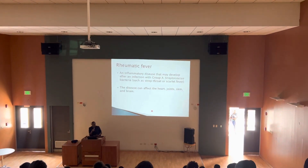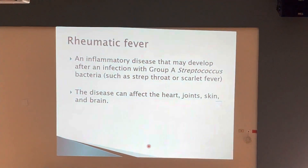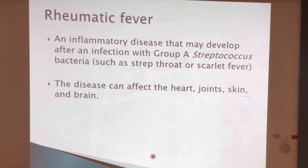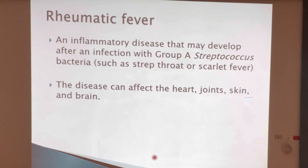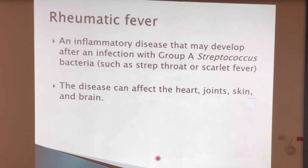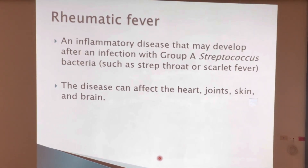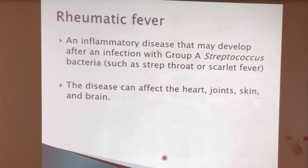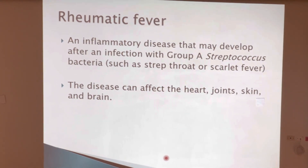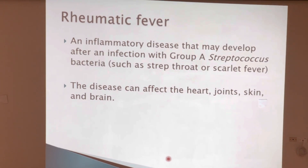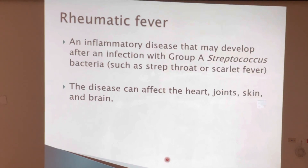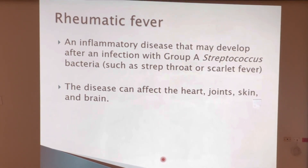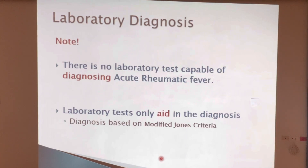Rheumatic fever typically develops after an infection with Group A Streptococcus, also termed Streptococcus pyogenes. This infection is usually in the form of strep throat, a sore throat, or impetigo, which is a skin infection. Rheumatic fever can affect the heart, the joints, the skin, as well as the brain.